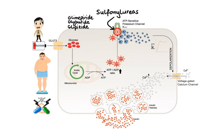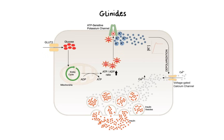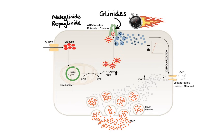Next is the glinides class. Just like sulfonylureas, glinides stimulate insulin secretion from pancreatic beta cells; however, they bind to ATP-sensitive potassium channels at a different site and with different kinetics, resulting in more rapid onset and shorter duration of action. This makes glinides a good choice for patients with primarily postprandial hyperglycemia. Examples include nateglinide and repaglinide. Common side effects include hypoglycemia and weight gain, though the risk appears lower than with sulfonylureas.